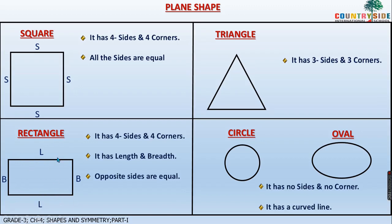And in circle, or oval — it has no sides and no corners. You cannot see any sides or corners. So we don't have any sides or corners. It has a curved line, so it is having simply the curved line.